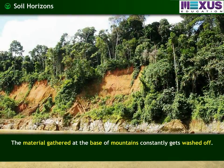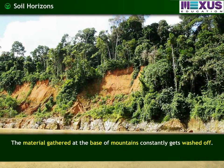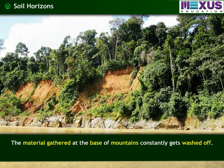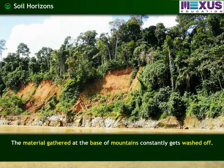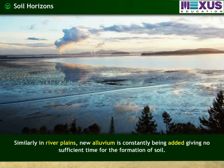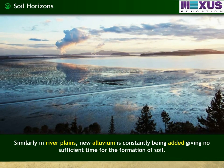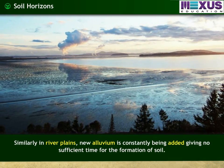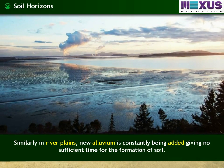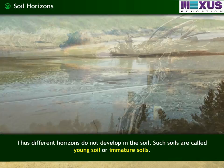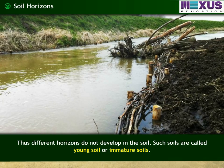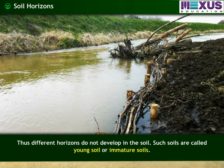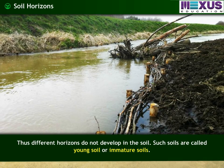The formation of mature soil takes a very long time period. The material gathered at the base of mountains constantly gets washed off, so this soil does not get sufficient time to form. Similarly, in river plains, new alluvium is constantly being added, giving no sufficient time for soil formation. Thus, different horizons do not develop, and such soils are called young or immature soils.